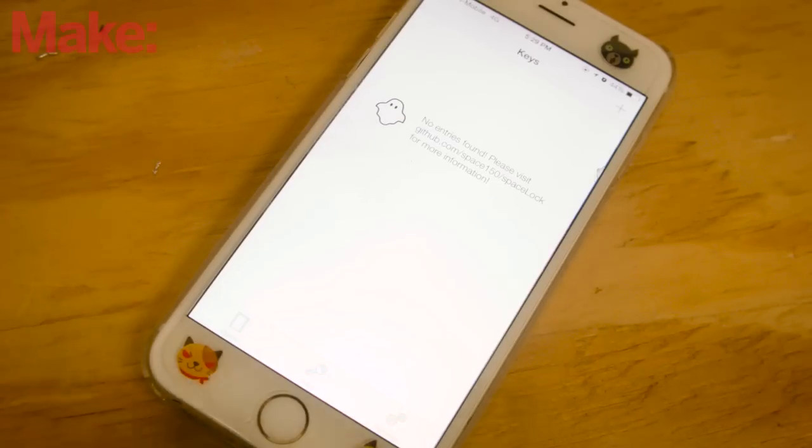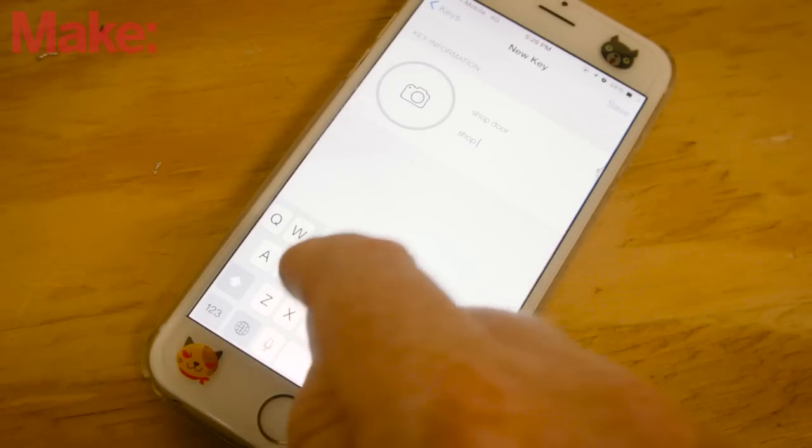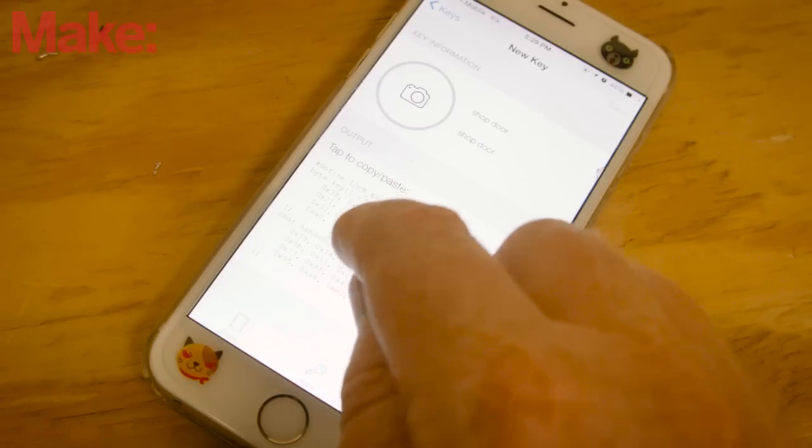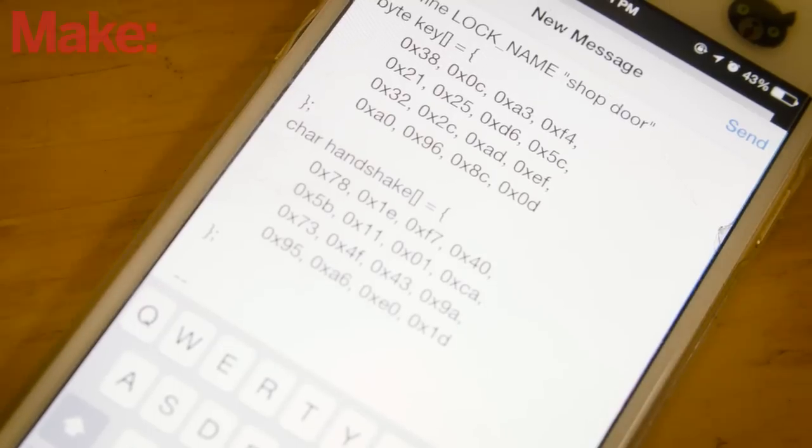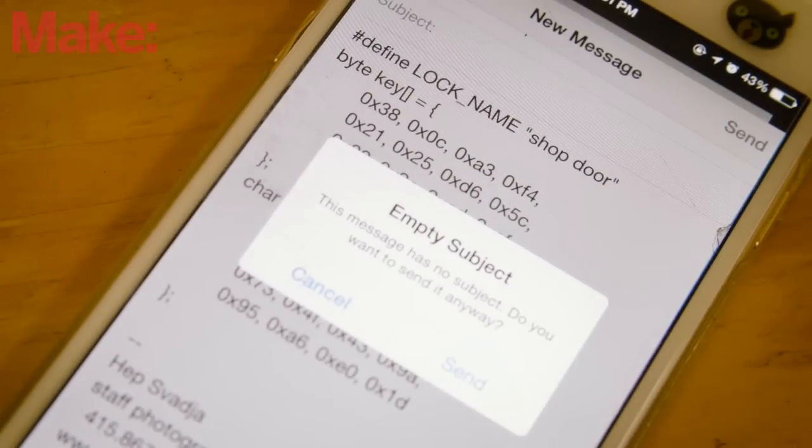Launch the iPhone app and go to the Keys tab. Tap the plus icon to add a new door and enter a name and unique ID. Once generated, copy the door name, key, and handshake, and send these to yourself in an email or note.